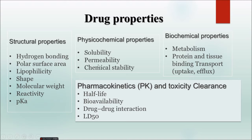The drug has various properties. One is structural properties, then physicochemical properties, biochemical properties, and others include pharmacokinetics and toxicity clearance. Structural properties include hydrogen bonding, polar surface area (PSA), lipophilicity, shape, molecular weight, reactivity, and pKa. Physicochemical properties include solubility, permeability, and chemical stability. Biochemical properties include metabolism, protein and tissue binding, transport, and everything.